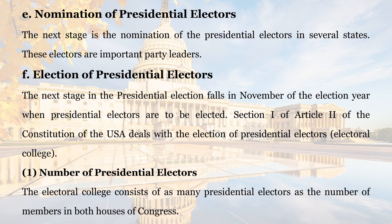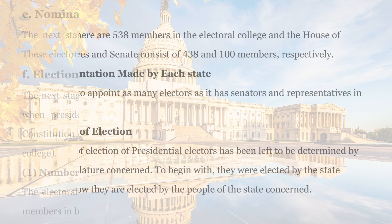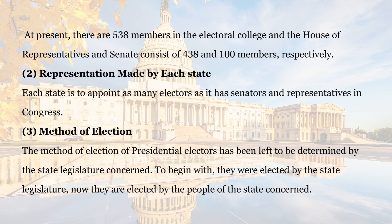Number of Presidential Electors. The Electoral College consists of as many presidential electors as the number of members in both houses of Congress. At present, there are 538 members in the Electoral College, and the House of Representatives and Senate consist of 438 and 100 members respectively. Each state is to appoint as many electors as it has senators and representatives in Congress. The method of election of presidential electors has been left to be determined by the state legislature concerned.